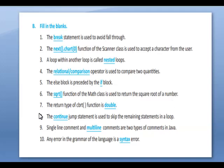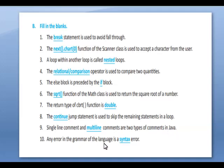The sqrt function of the Math class is used to return the square root of a number. The return type of the cbrt function is double, that is cube root of a function is double. The continue jump statement is used to skip the remaining statements in a loop. Single line comments and multi-line comments are two types of comments in Java. An error in the grammar of the language is a syntax error.